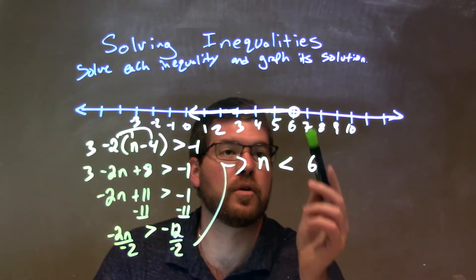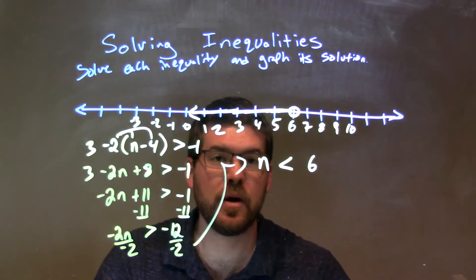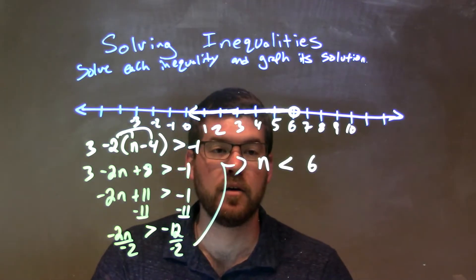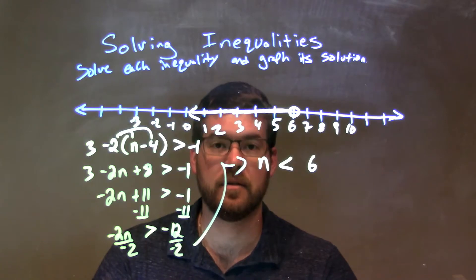Okay? Graphing that, open circle at 6. Now, we have an open circle at 6 because it's not equal to, and I'll shade to the left. So, again, our final answer is just n is less than 6.